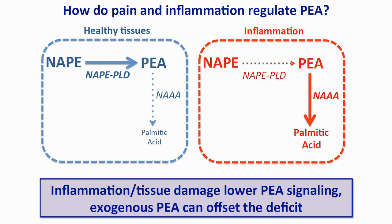Why does this matter? Because if inflammation and tissue damage lower PEA production, then by replacing the PEA lost during inflammation we will have an analgesic and anti-inflammatory effect. Administration of exogenous PEA can offset this deficit. We are giving a vitamin to a tissue that suffers from hypovitaminosis — it's not the same as giving a drug. It's restoring a normal level of an endogenous anti-inflammatory and analgesic agent.